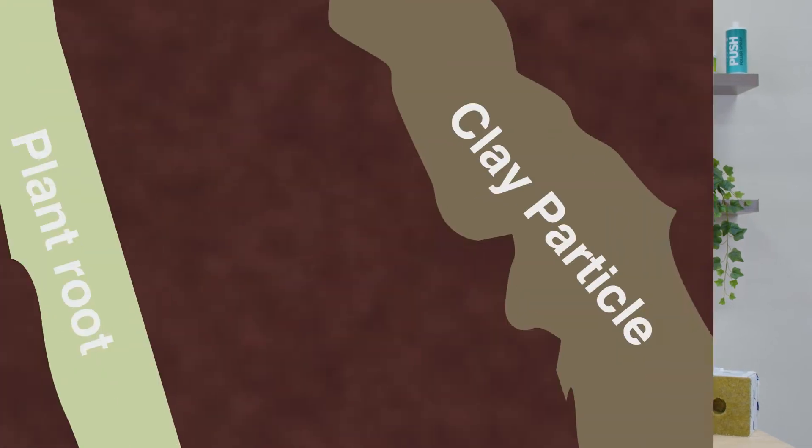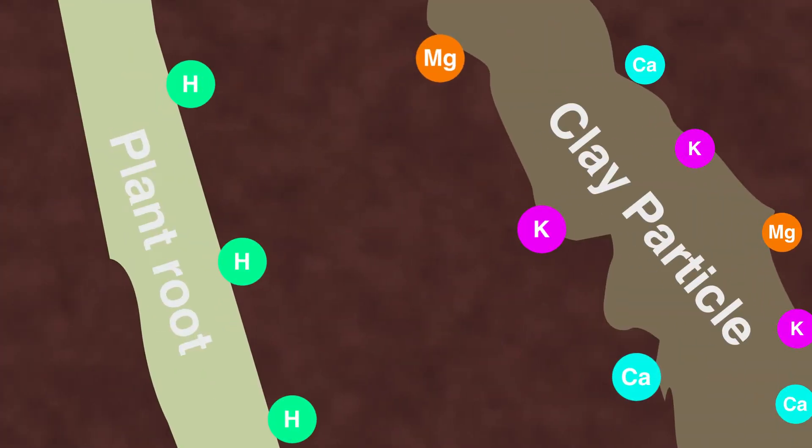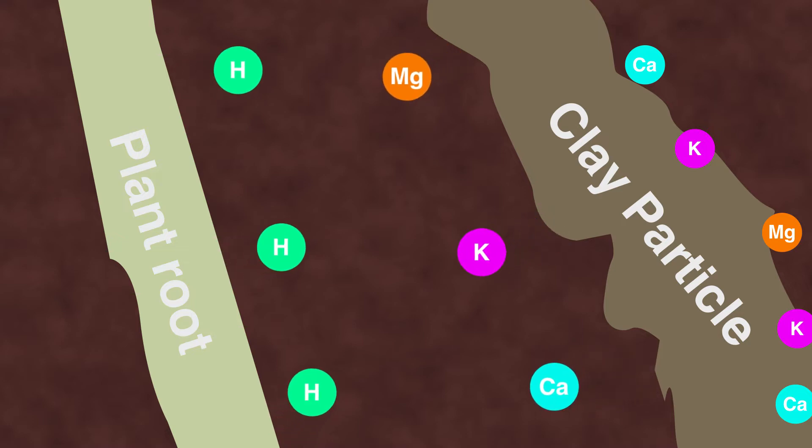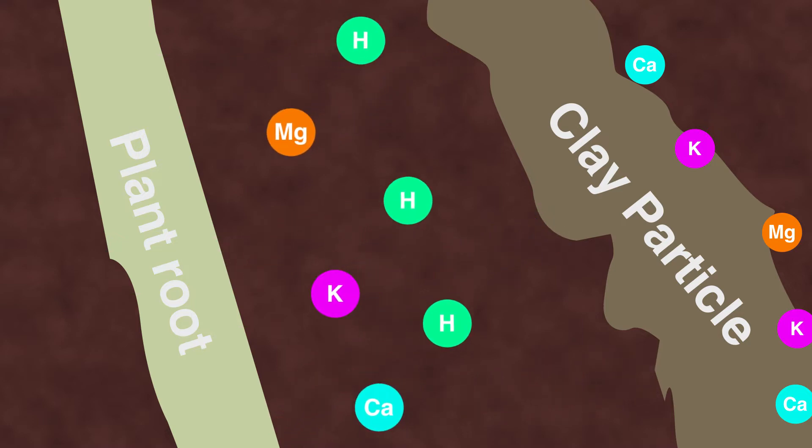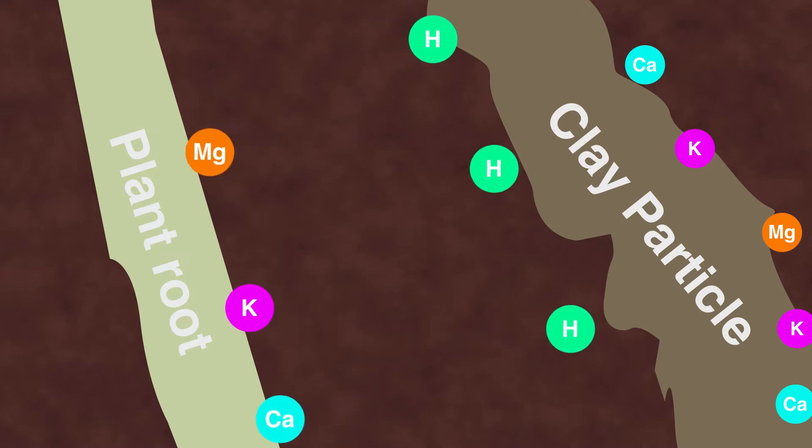Cation exchange capacity, or CEC, refers to a substrate's ability to capture and exchange cations within the rhizosphere. Nutrients dissolved in solution contain necessary minerals that carry a positive charge called cations. Common cations include calcium, phosphorus, magnesium, and potassium, which are essential for plant growth. The higher a negative charge, or the more anions that the media holds, means that the substrate is able to hold more of these essential cations for the plant's roots to exchange and absorb.